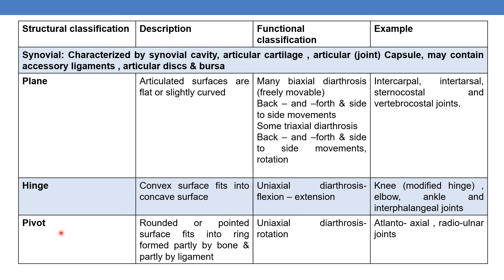The next type of synovial joint is the pivot joint. Here, a rounded or pointed surface fits into a ring formed partly by bone and partly by a ligament. It also permits uniaxial diarthrosis — specifically rotation. Examples of pivot joints are the atlantoaxial and radioulnar joints.